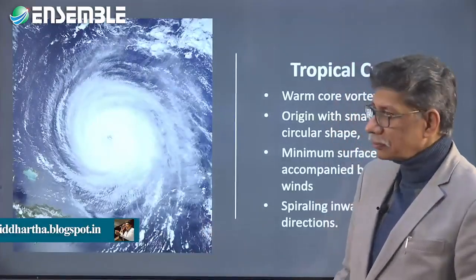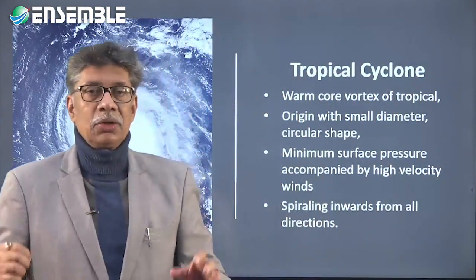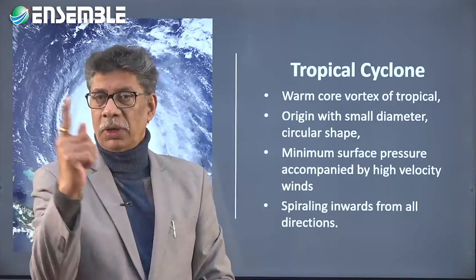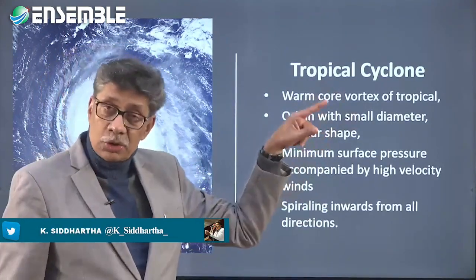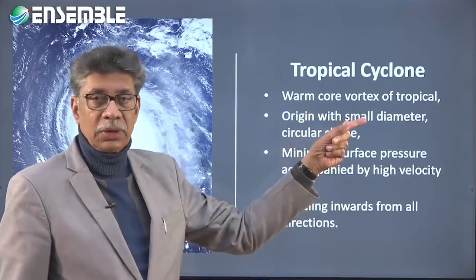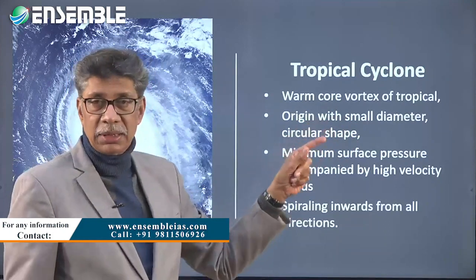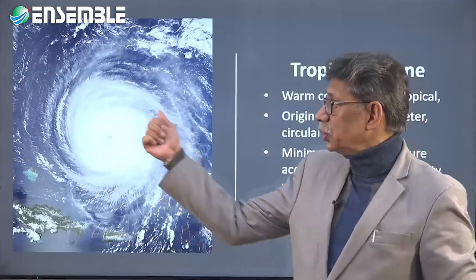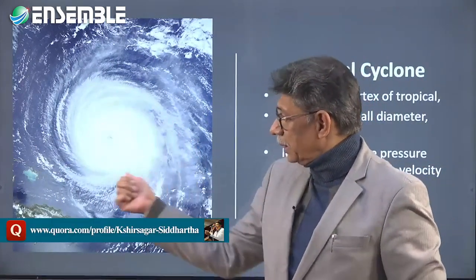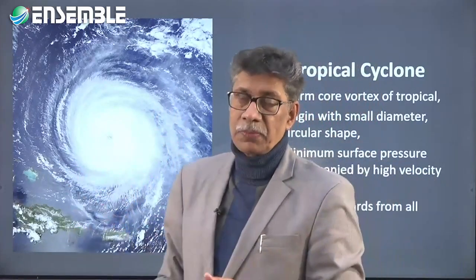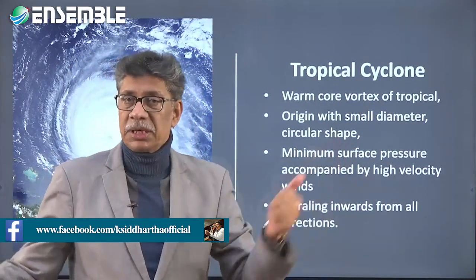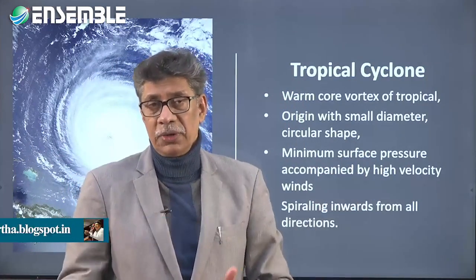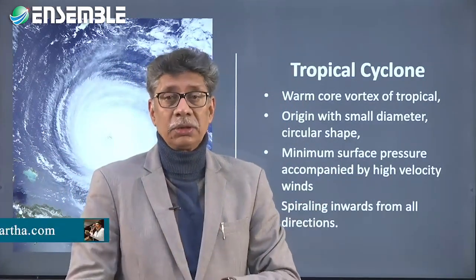The third is the tropical cyclone. A tropical cyclone is a warm core vortex circulation. The core is warm and the winds blow in the form of a vortex. It is a warm core vortex circulation in tropical areas, that is within 23.5 degrees north and 23.5 degrees south. It originates with a small diameter of around 500 kilometers and is circular in shape — like a spiral galaxy type of shape when viewed from space. It has a minimum surface pressure at the eye, accompanied by very high velocity winds.